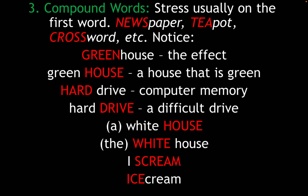'Greenhouse' versus 'green house.' 'Hard drive' versus 'hard drive.' 'White House' (stressed on 'White') is where the US President lives and works, but 'white house' (stressed on 'house') just means a house that is white. And 'ice cream' the compound noun is different from 'ice cream' as a noun-verb phrase, where you stress the verb.